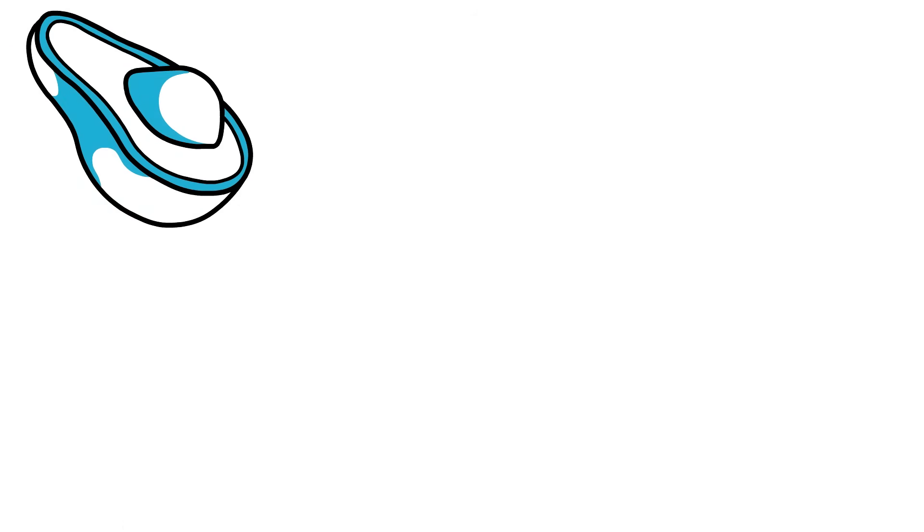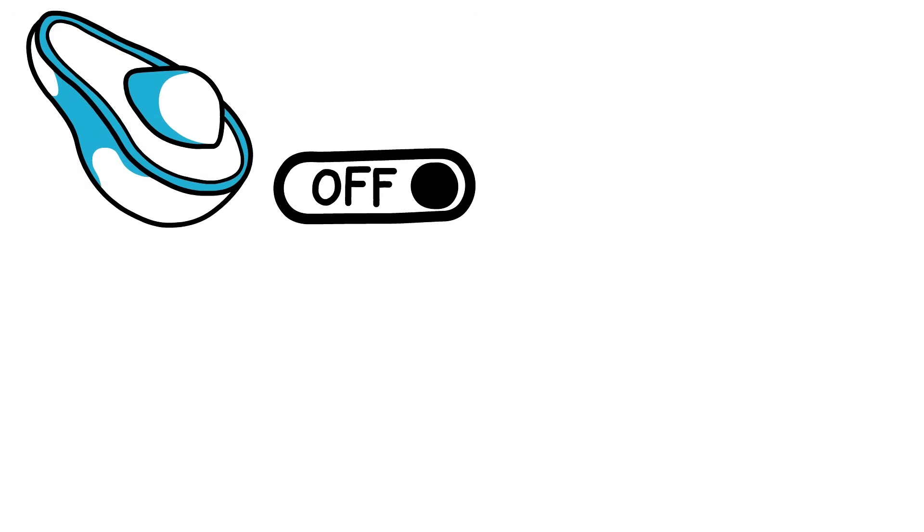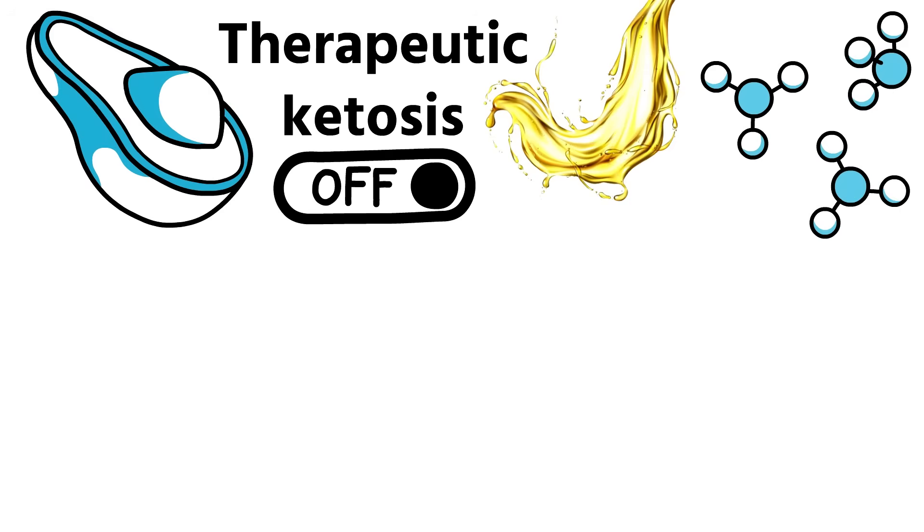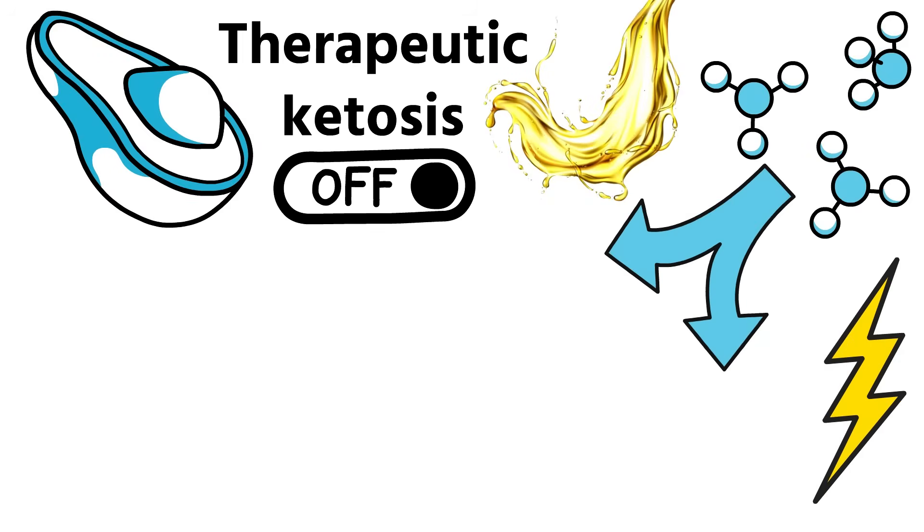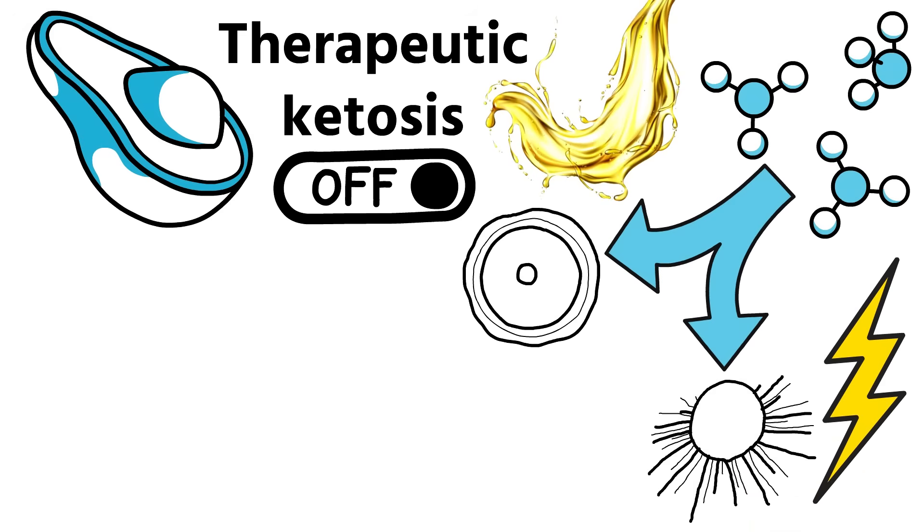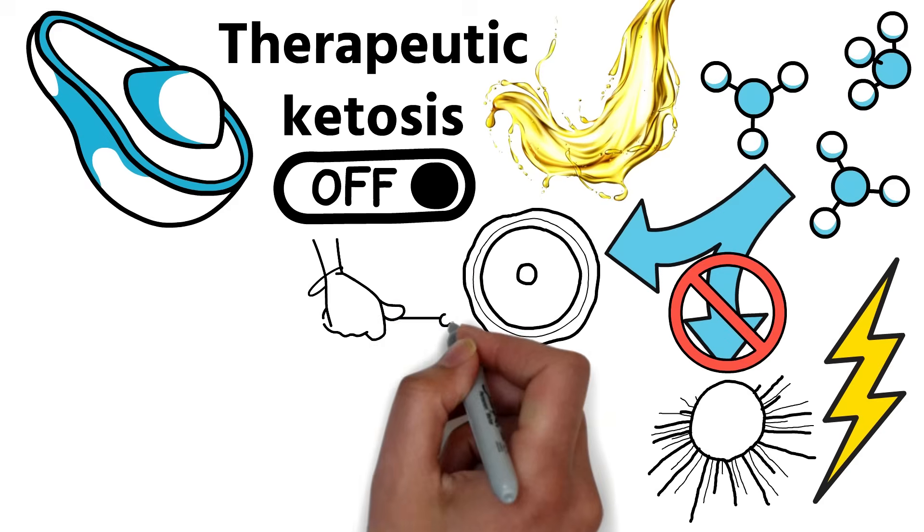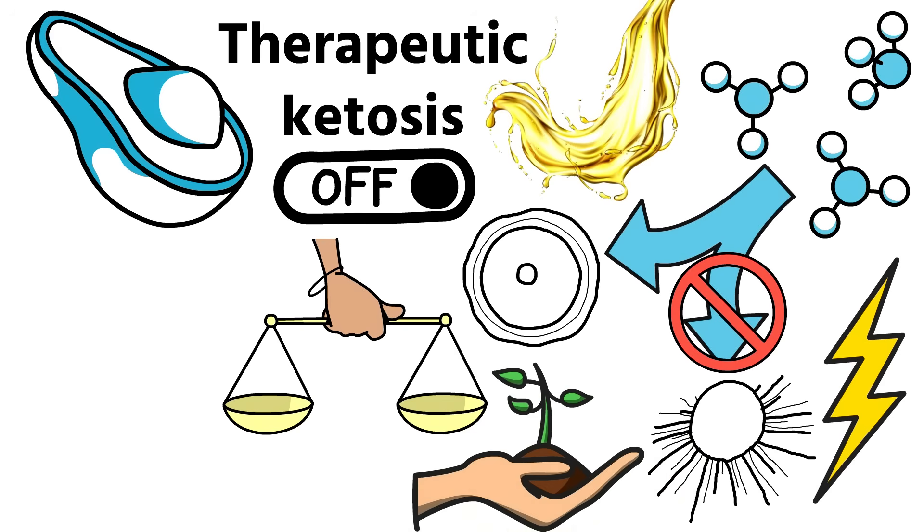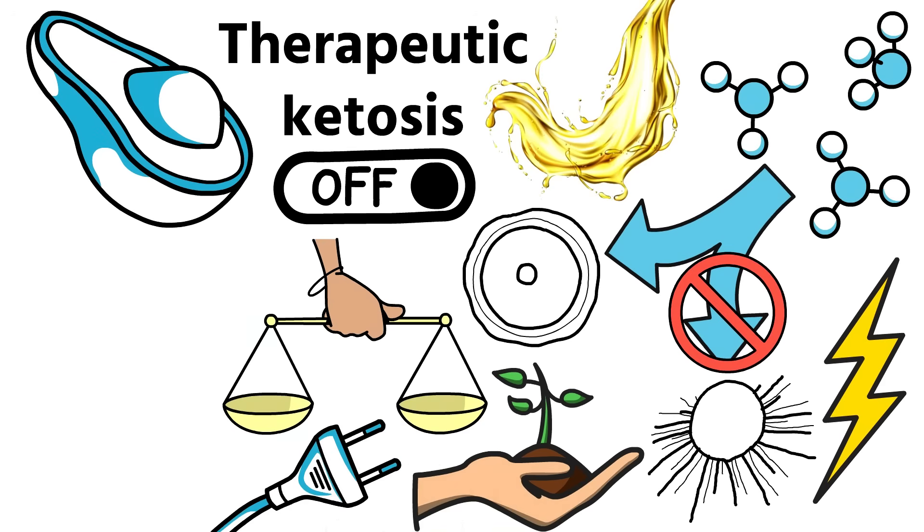Natural fats encourage the body to enter a state known as therapeutic ketosis. In this state, the body converts fat into ketones for energy. Healthy cells can use ketones, but cancer cells cannot. By maintaining this metabolic balance, healthy cells continue to thrive, while cancer cells are deprived of their primary energy source.